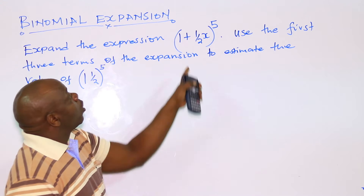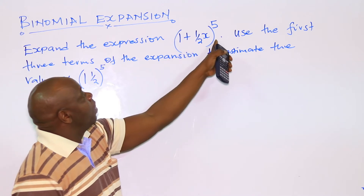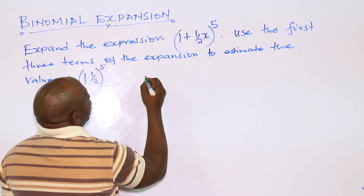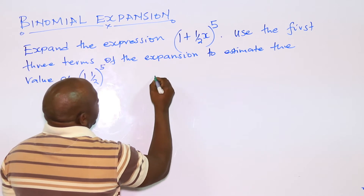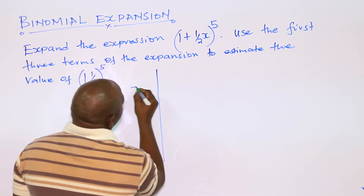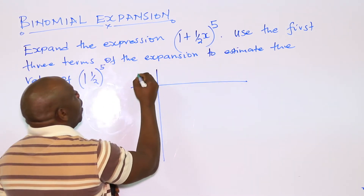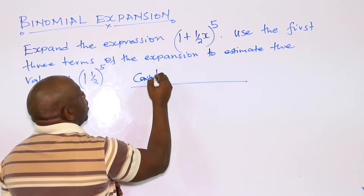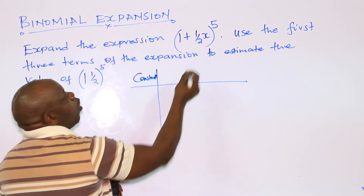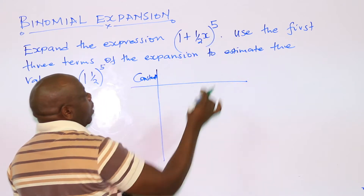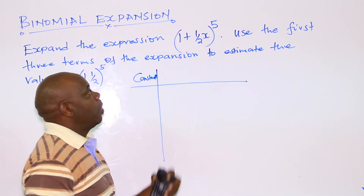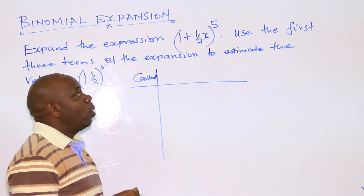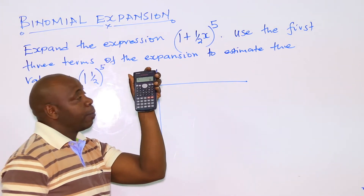To expand this binomial expansion, we start by drawing this box here. Here, we get the constant terms of power 5. To get these constant terms, you can either use Pascal's triangle or you can use your calculator.